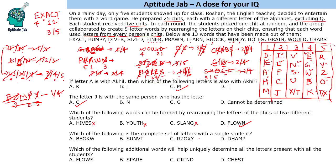Which of the following is the complete set of letters with a single student? B, E, G, K, W — that is the complete set present in group 4. The options with S, U, B, T or R, Z, O, X, Y cannot be confirmed since we are not sure whether T or X is in those groups. D, H, A, M, P is also not correct. Finally, which additional word would help uniquely determine all letters? The answer is CHEST — using CHEST, C, H, E, S are already placed, and this uniquely determines that T is in one group and X is in the other. So CHEST is the answer. That was the solution to the set.